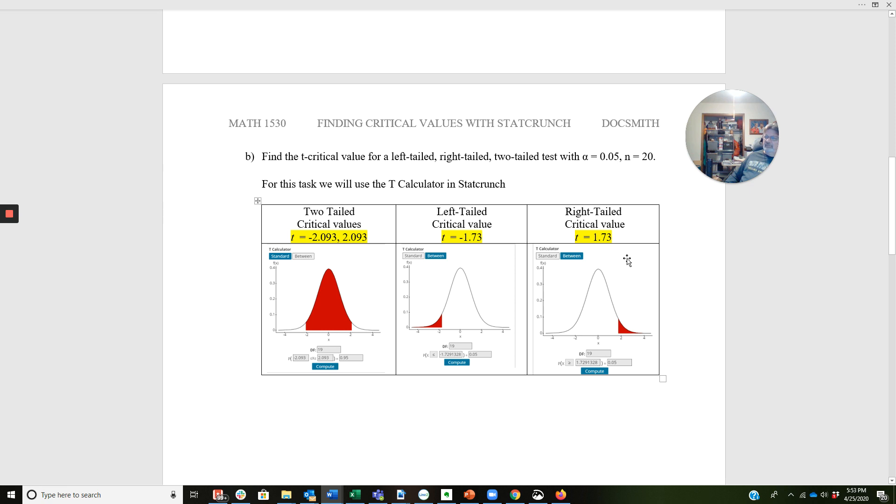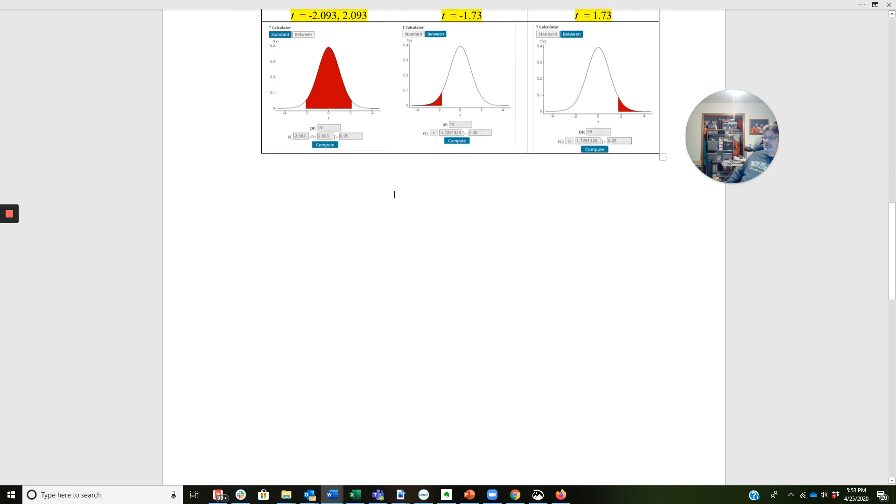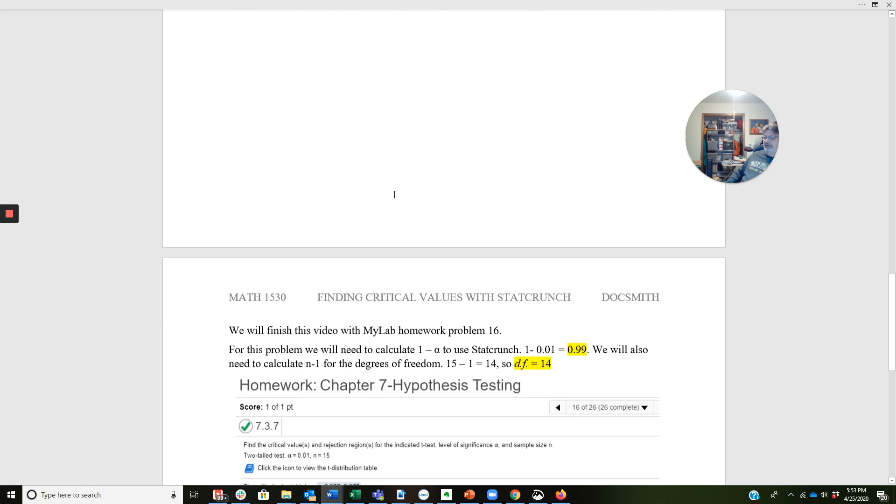And then for the last example, when we go to the right, we just change the direction here. Put the 0.05 and we get the inverse of the left-tailed test, the opposite, which is 1.73. So that's a review from Chapter 6. Let's look at one of the homework questions that we have from this chapter.